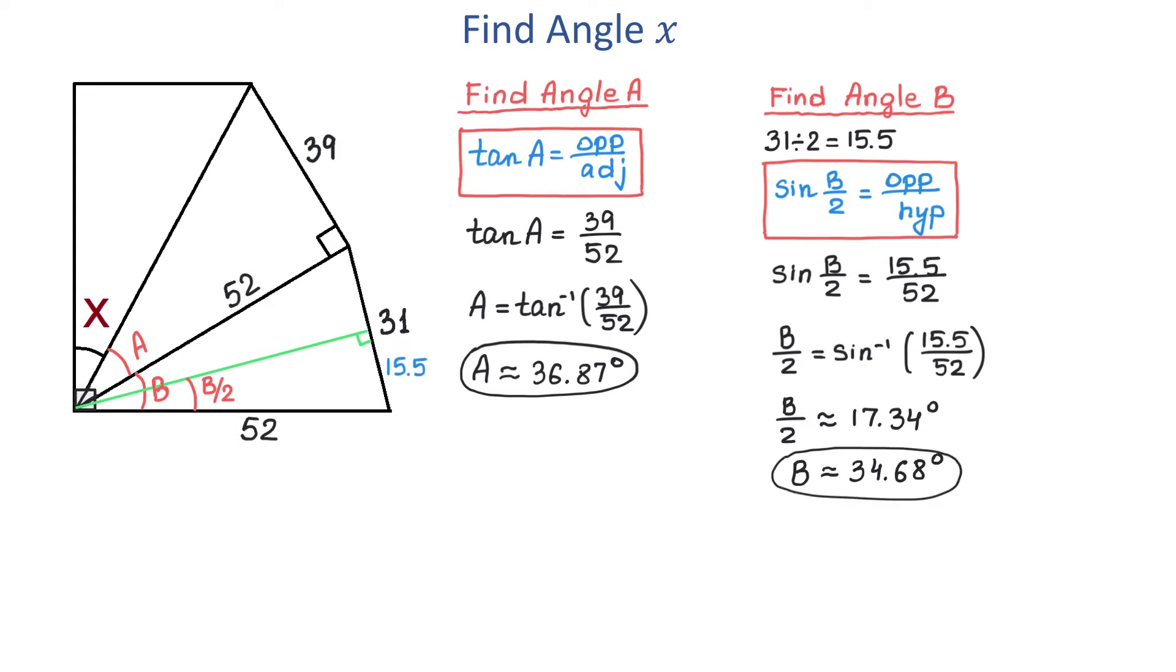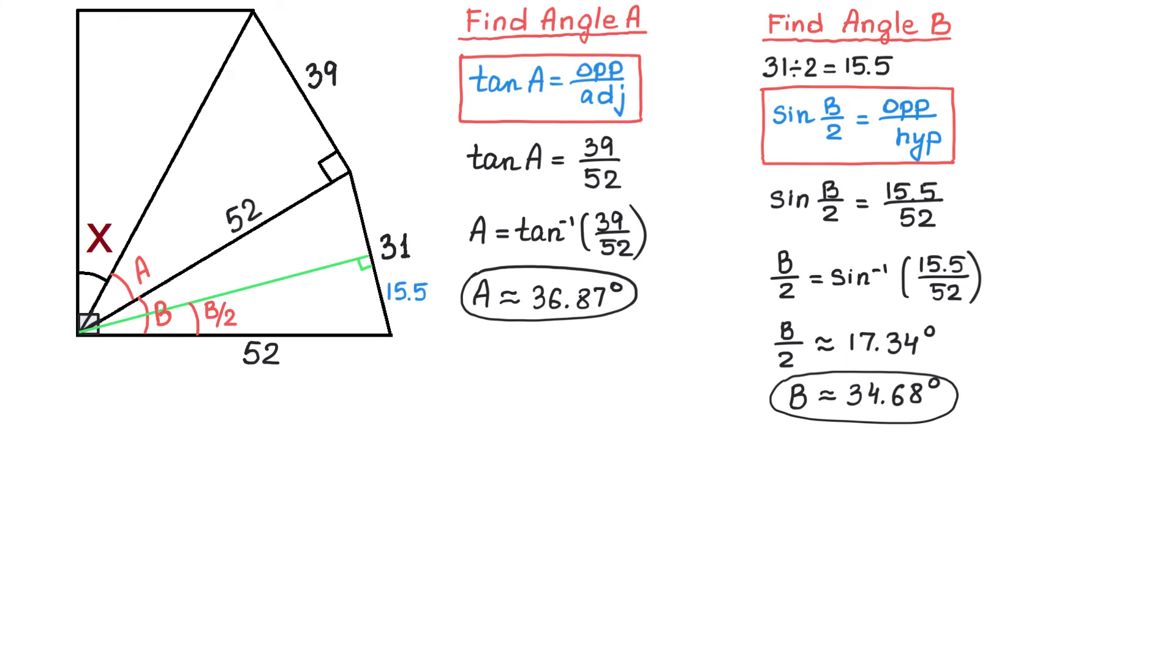So here we have both angles A and B and to find angle X we will subtract these angles from 90 degrees. But before we do that let me show you another way of finding angle B. For this we will use the law of cosines.